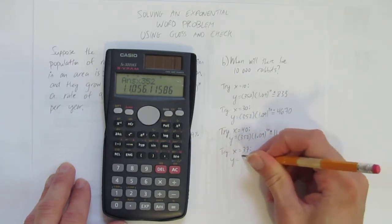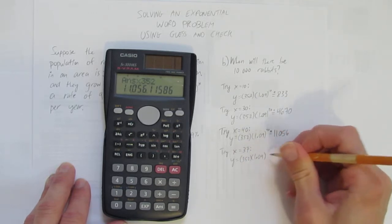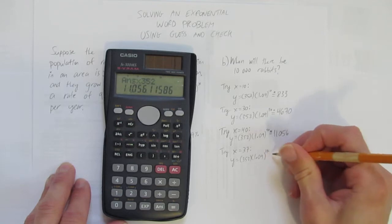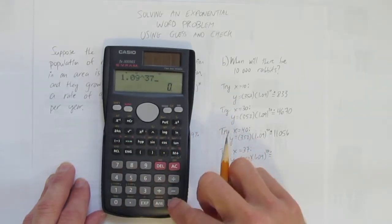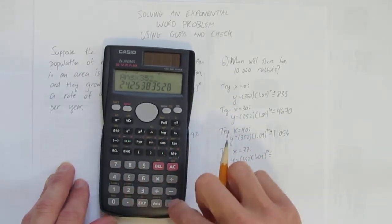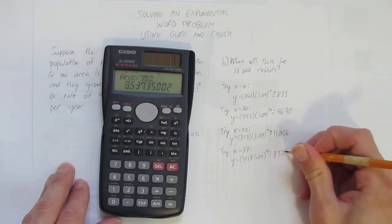Y equals. Again, I'm showing my work every time, even though it's the same equation. Show the reader what you're doing. Don't forget the rounding dot. 1.09 to the power of 37 equals times 352.